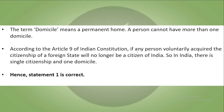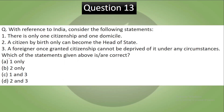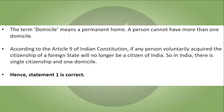The correct answer is A — only statement 1 is correct. A citizen by naturalization, registration, or other means can also become head of state, so statement 2 is incorrect. A foreigner once granted citizenship can be deprived of it — this is called termination, renunciation, or deprivation — so statement 3 is also incorrect. According to Article 9 of the Constitution, if a person voluntarily acquires citizenship of a foreign state, they are no longer a citizen of India. In India, there is single citizenship and one domicile.